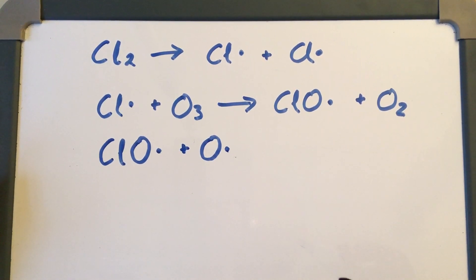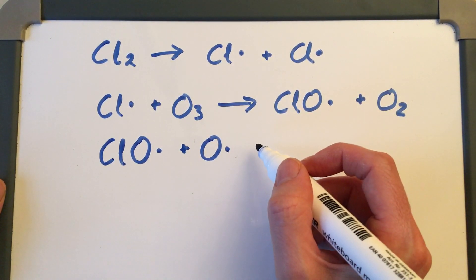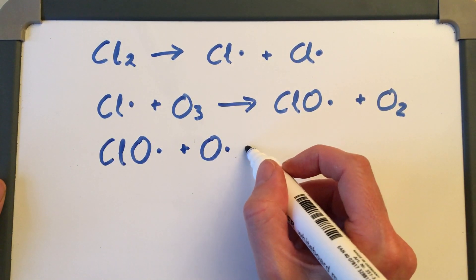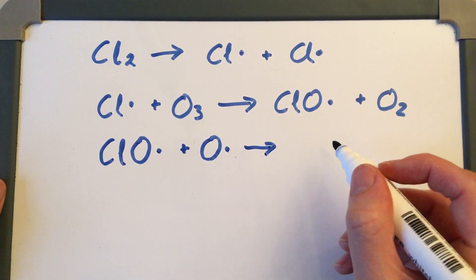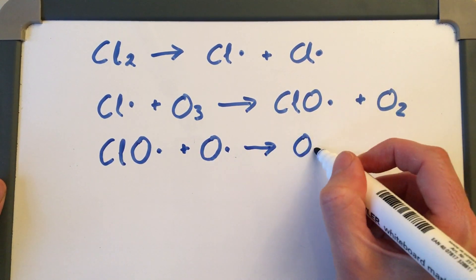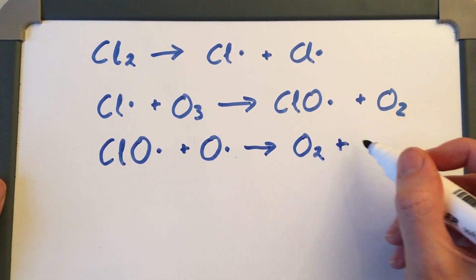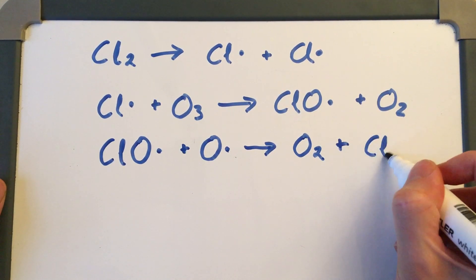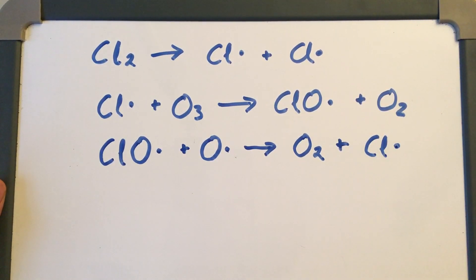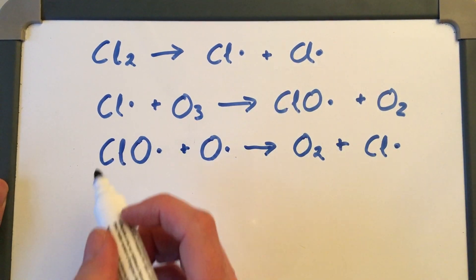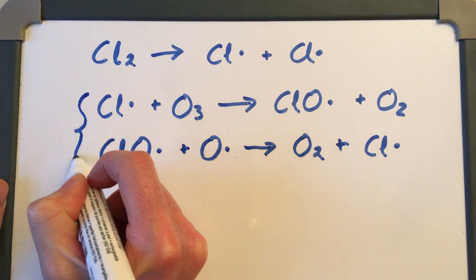The chlorate radical can then react with an oxygen radical — which might have been produced by ozone being split into oxygen and an oxygen radical. The chlorate radical reacts with the oxygen radical to produce another oxygen molecule and regenerate the chlorine radical. So we say that chlorine acts as a catalyst for this reaction.